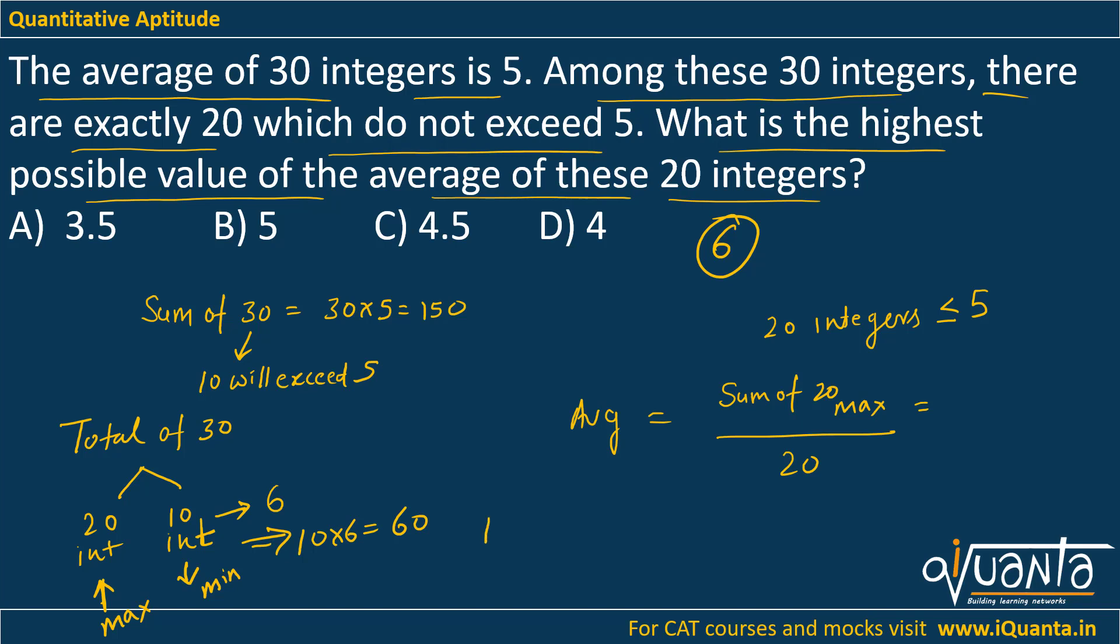So out of 150, the sum of 60 is allotted to 10 integers. I will remain with 20 integers, and their sum must be equal to 90 because the total sum has to be 150 in the end.